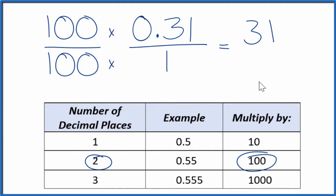It's just that we're representing it as a fraction here. So 100 times 1 is 100. And we converted the decimal 0.31 to the fraction 31 over 100.